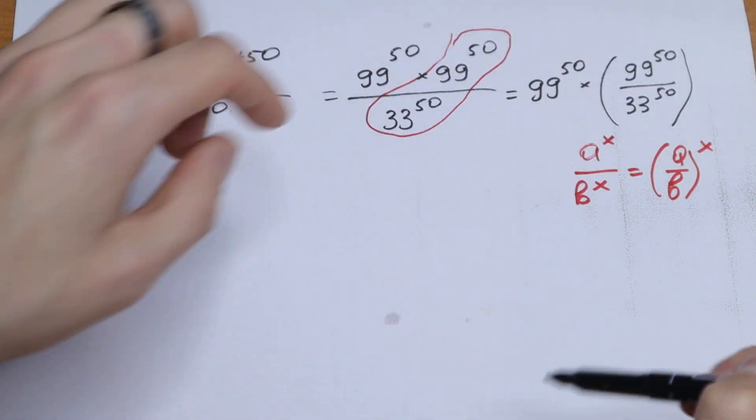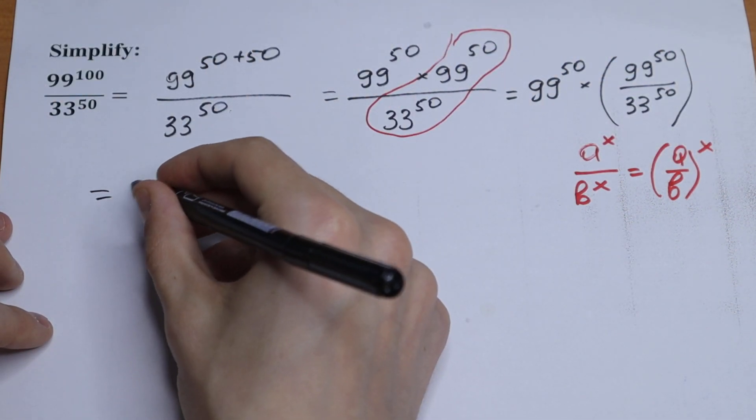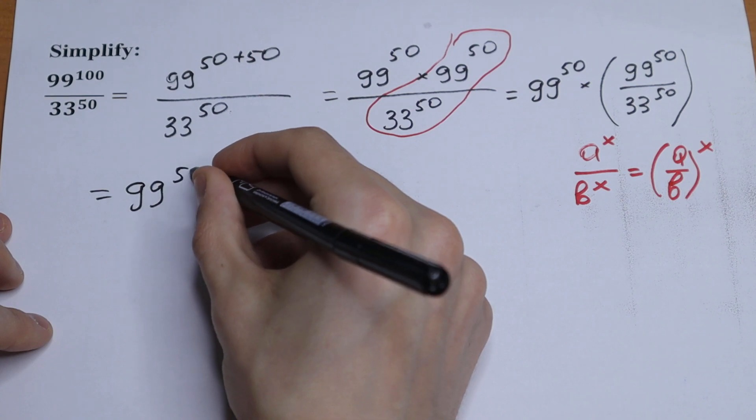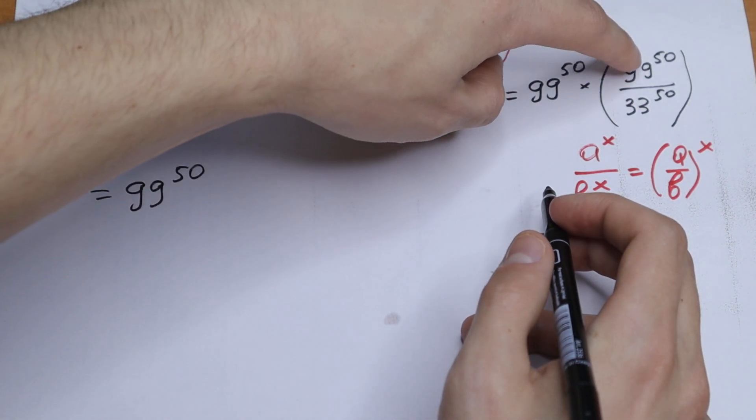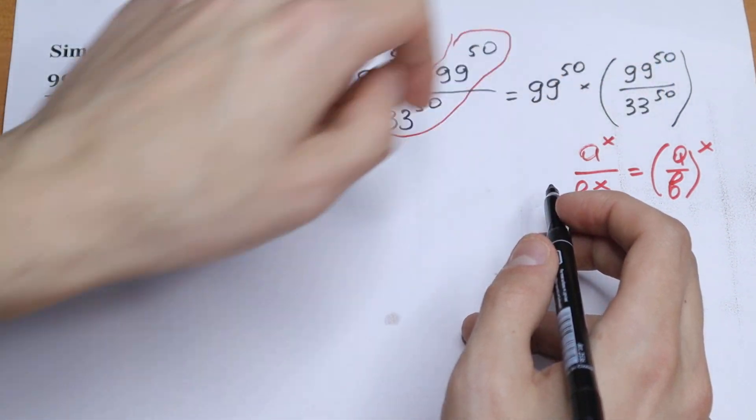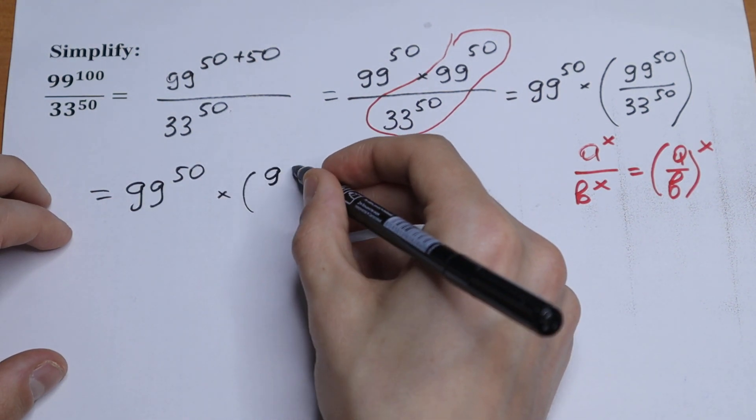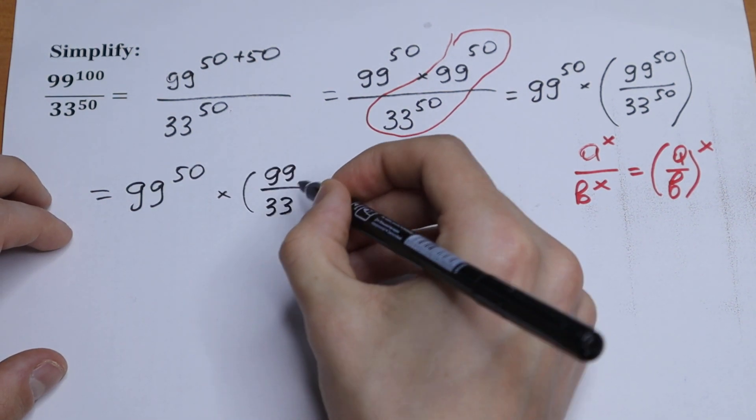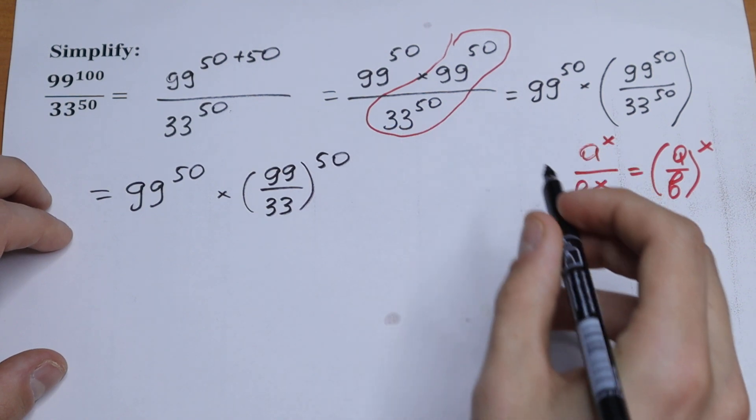So we can write this as... I write it right here. So this is the same 99 to the power 50. And right here we can write this as 99 over 33 to the power 50, so times 99 over 33 all raised to the power 50.